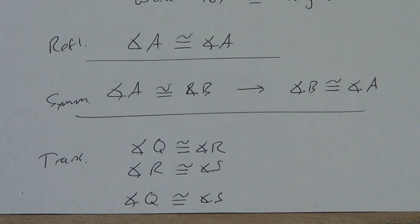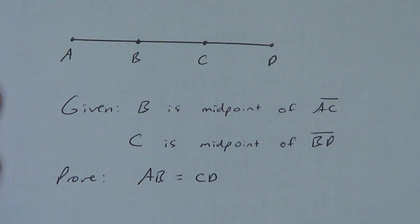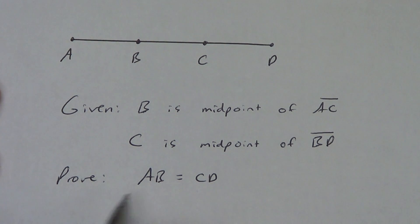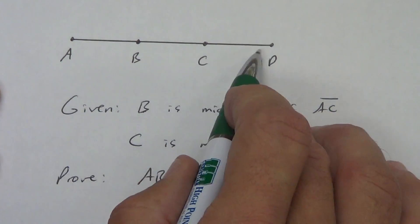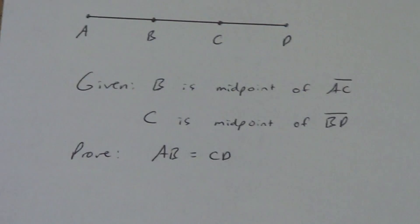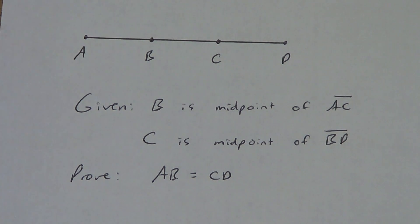Let's go ahead and apply them. There's your picture: B is the midpoint of AC, C is the midpoint of BD. We are going to prove that AB equals CD — this thing here is equal to this thing over here. We're going to do that in a two-column proof. You can see I already have it set up. Copy that down, pause the video, get that copied, and then get ready to do the proof.